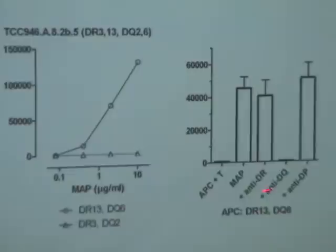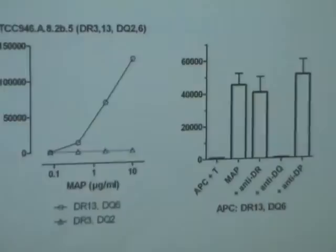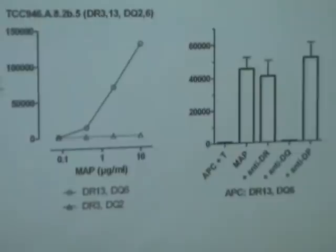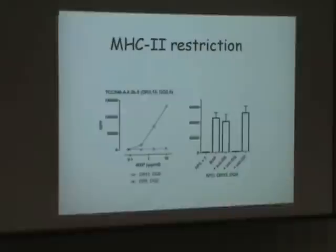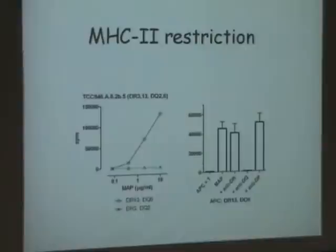So this response was DQ6-restricted, and we did this for all the clones. 25 of the 28 clones we could confirm that this would be an MHC class 2 presented antigen. In the last three clones we don't really know what's going on, but we have a feeling that it might be recognition of lipid antigens in the context of CD1, but I won't show any data because this is very preliminary.